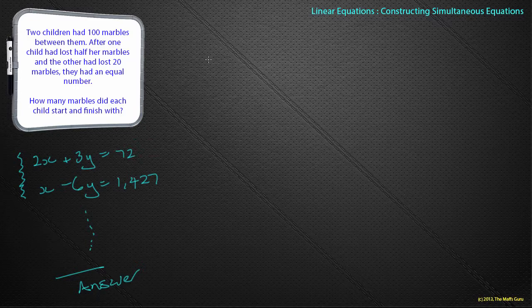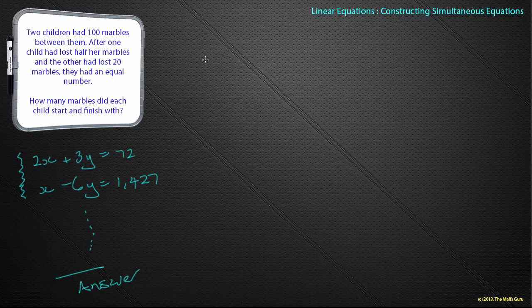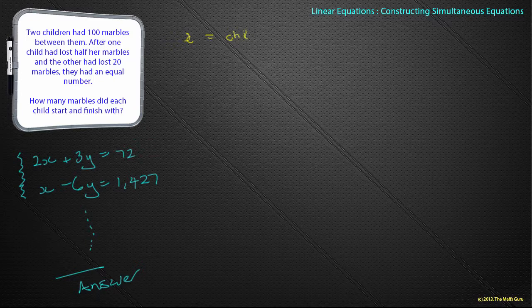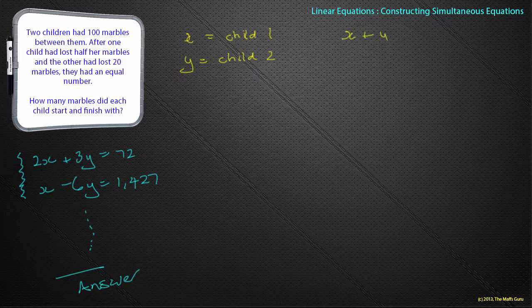Let's look once again at the question and the actual information they're giving me. Two children had 100 marbles between them. So there's two children having 100 marbles between them. After one child had lost half her marbles, and the other had lost 20 marbles, they each had an equal number. How many marbles did each child start and finish with? So let X be the number of marbles that child 1 started with, and let Y be the number of marbles that child 2 started with. So we know that between them, they had 100 marbles. So X plus Y is equal to 100 marbles. Well, that looks pretty nice. We've got our first equation.